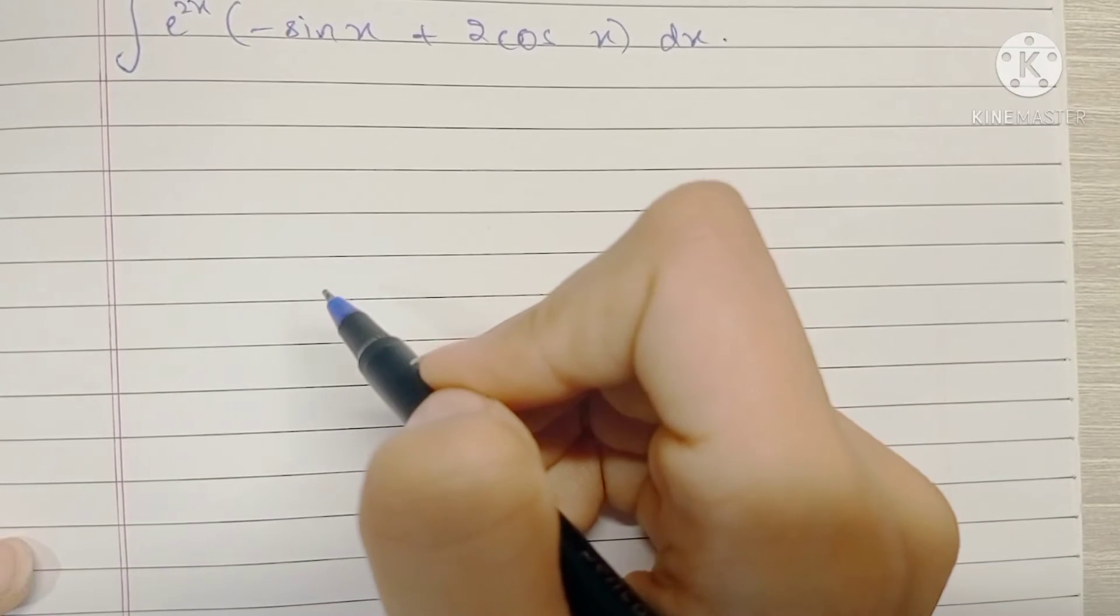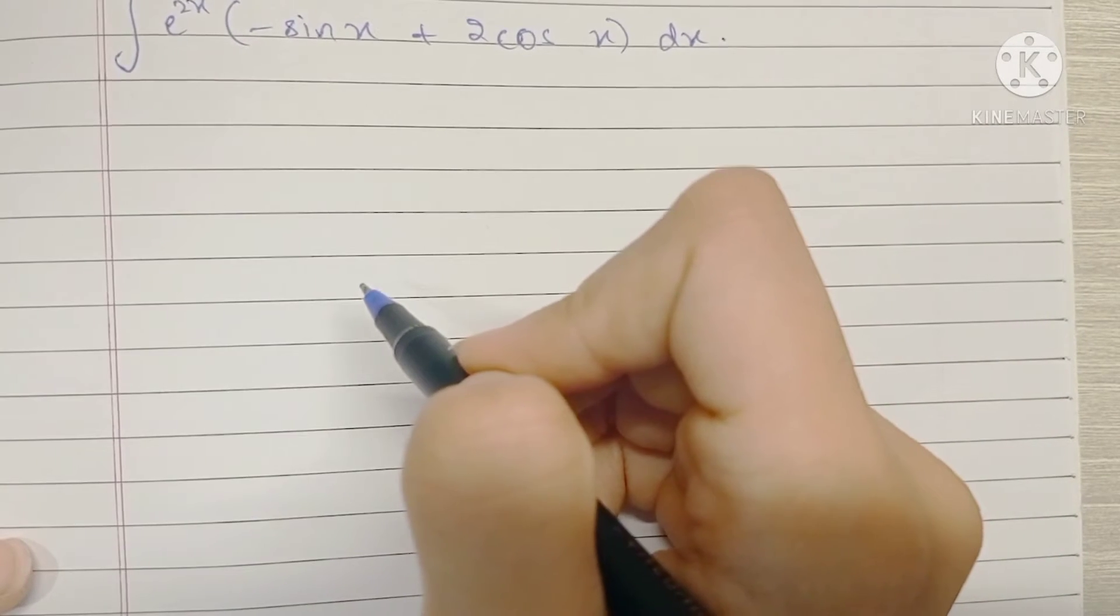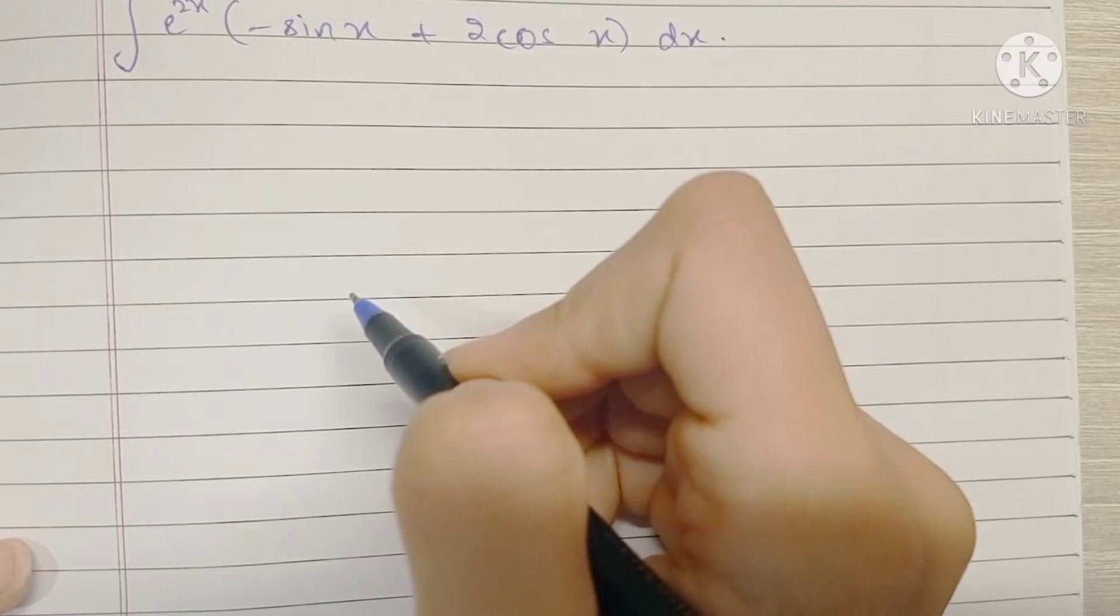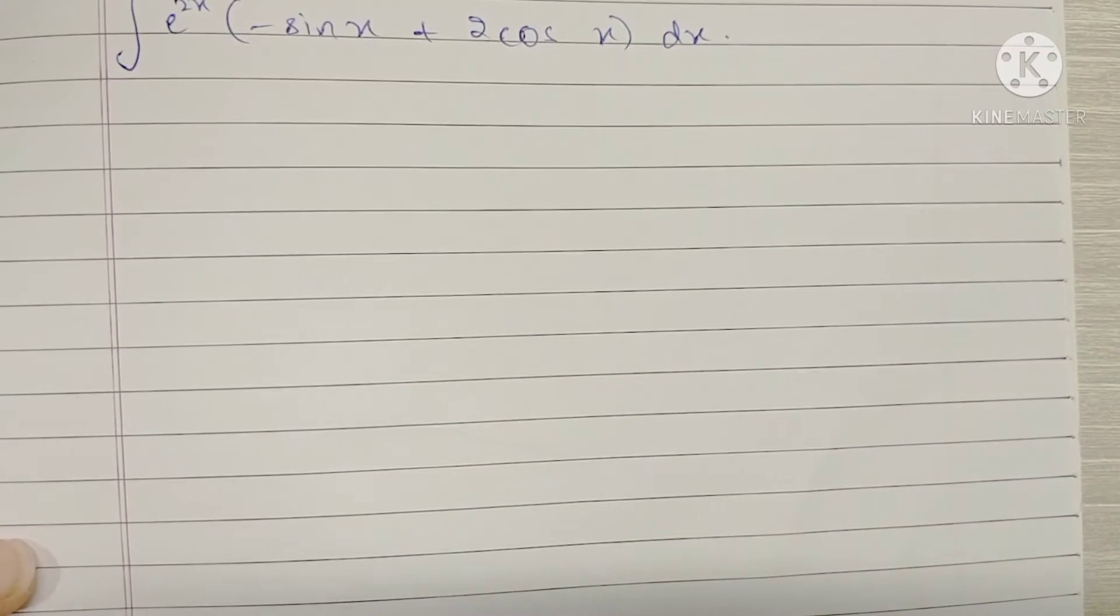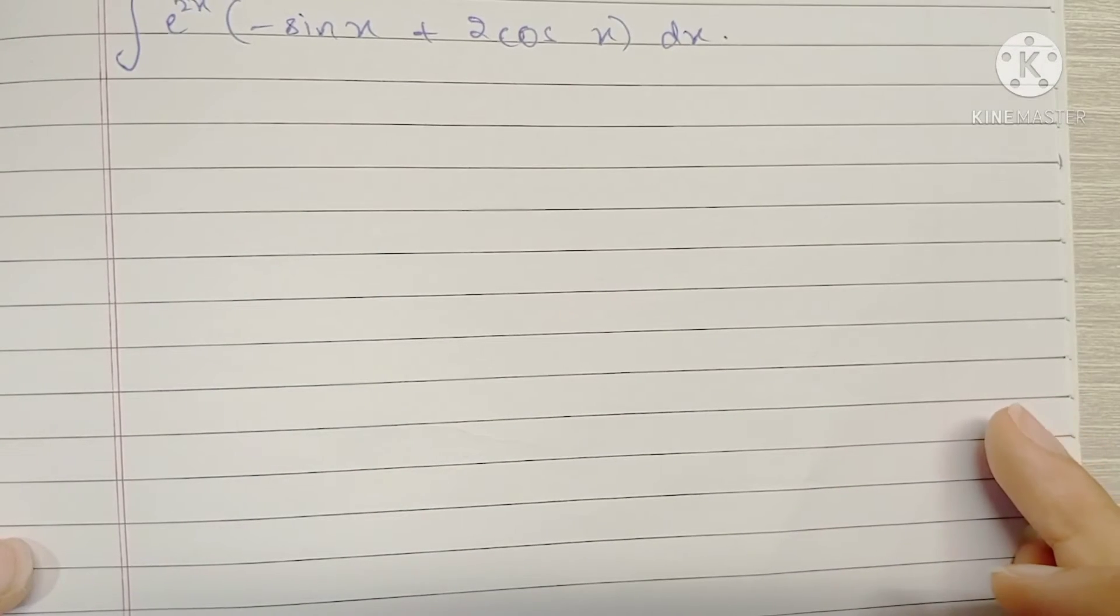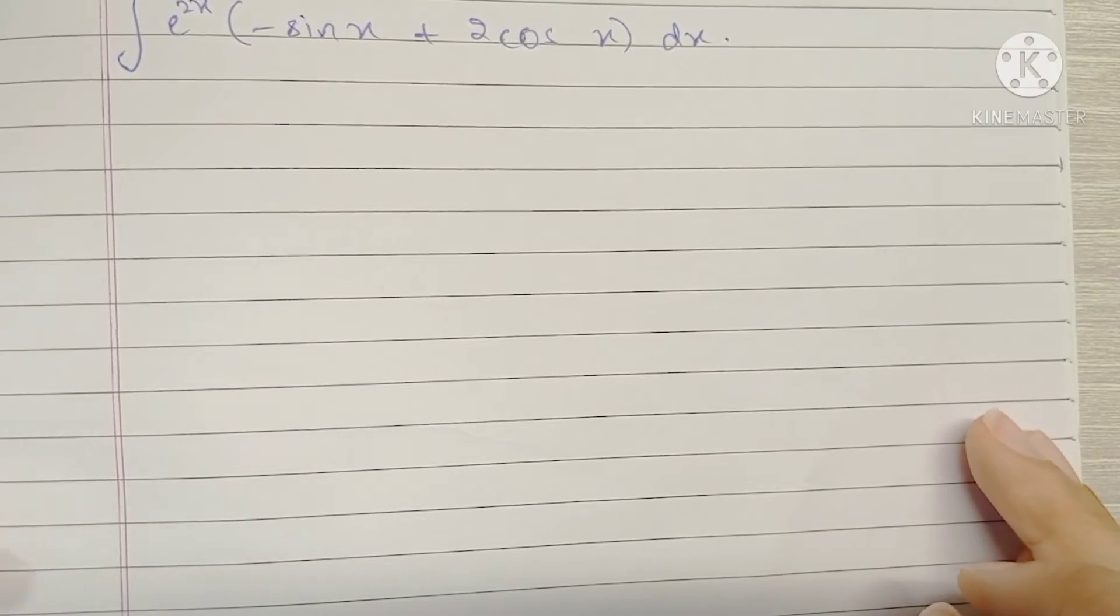We're going to be splitting them into two different integrals and solving one of the integral by parts, and thus the first integral and the third integral which we get by parts will get cancelled. So let's begin.